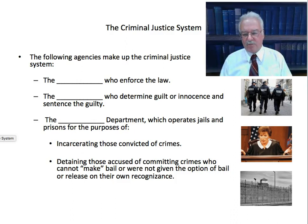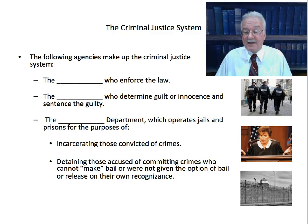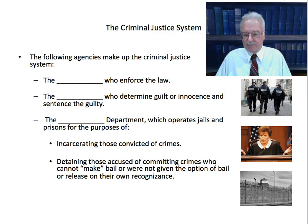Let's talk about the criminal justice system, which is really the main topic of this course. The following agencies make up the criminal justice system, in order of where they step into the process. Who enforces the law? The police. The police are the ones who enforce the law. Once a person is arrested, who determines guilt or innocence and gives a sentence to the guilty person? The courts. The courts determine guilt or innocence and sentence the guilty.